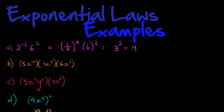Another way to do it: 6 times 6 is 36, and 2 to the power of negative 2 means 36 gets divided by 2 twice — half of 36 is 18, and half of 18 is 9. So the same answer either way.